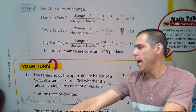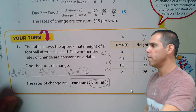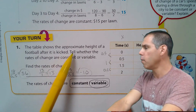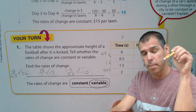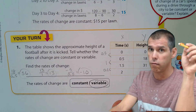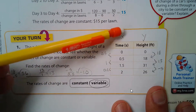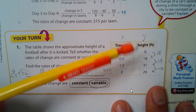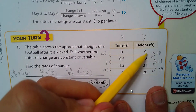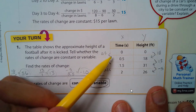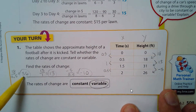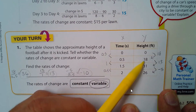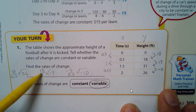The next table shows the approximate height of a football after it is kicked. We need to tell whether the rates of change are constant or variable. This table is vertical: the first column is the x values and the second column is the y values. The y values changed by 18 and the x values changed by 0.5, making a ratio of 18 divided by 0.5, which is 36. Then the y values changed by 13 and x changed by 1, so 13 divided by 1 is 13.